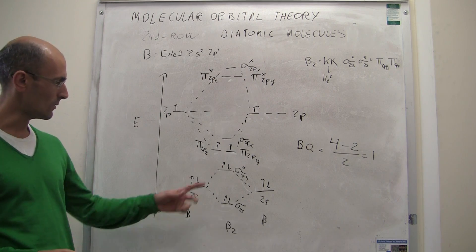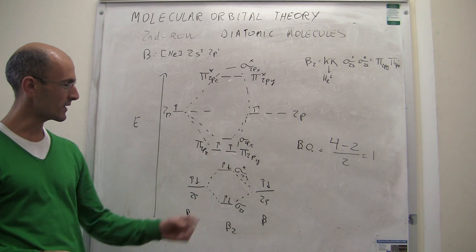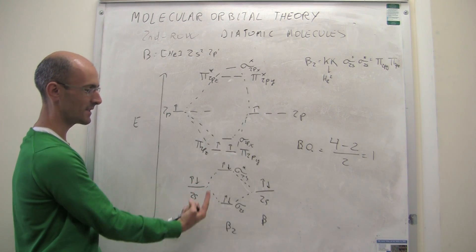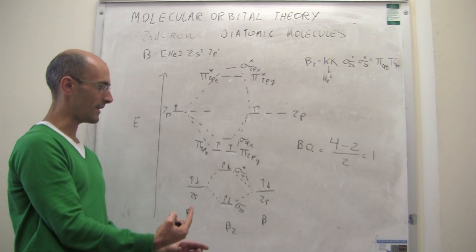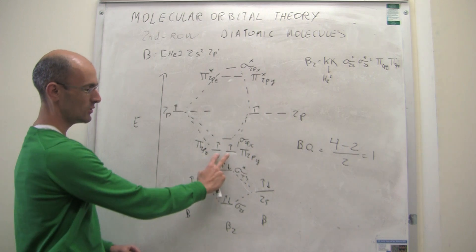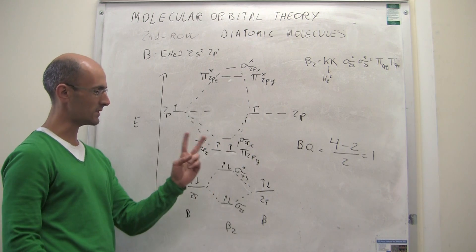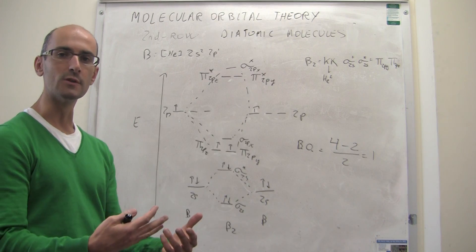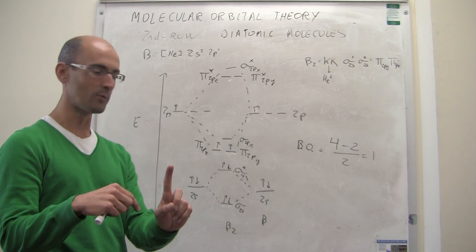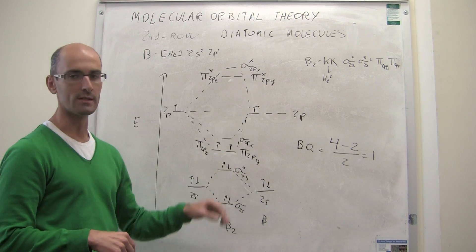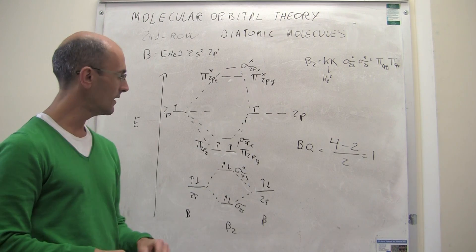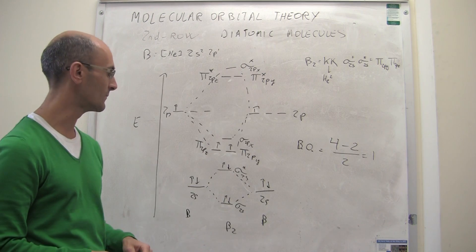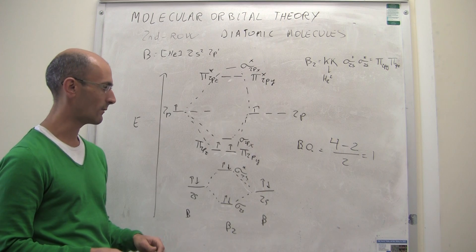Something very interesting happens in the orbital structure: the total number of spins pointing up is not perfectly balanced by the number pointing down. There are two more spins pointing up than pointing down. When you have this unevenness between spins, the molecule is paramagnetic and can be affected by an external magnetic field, as we will see when we talk about NMR.